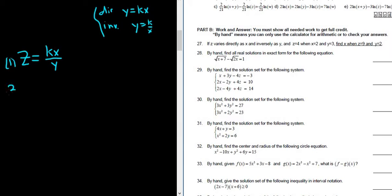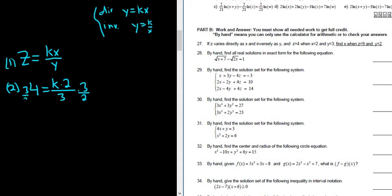The second step is to find k. It says z equals 4 when x equals 2 and y equals 3. So z is 4, k is what we need to find, x is 2, and y is 3. To solve for k, we multiply by the reciprocal — 3 over 2. Because 2 goes into 4 twice, and 3 times 2 is 6. So k equals 6.